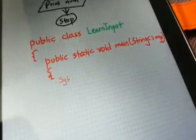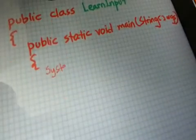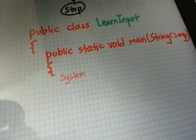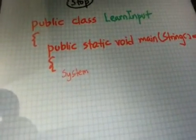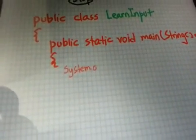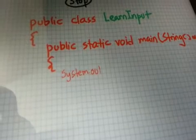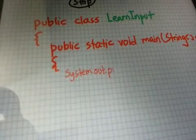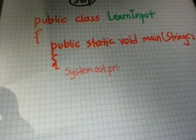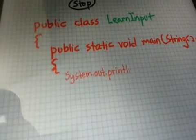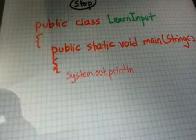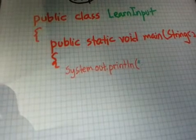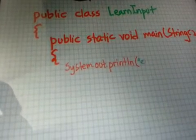Now what we will try to do is write the code for the prompt. We know that prompt is an output, so all we need to do is write System.out.println, which is the code we write to output something to the screen.